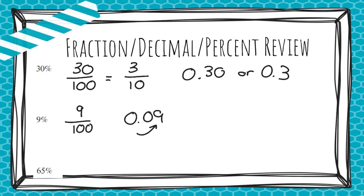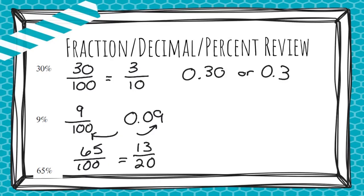The 9 has to be in the hundredths place because this is the hundredths. And then for 65%, you have 65 out of 100. If that wasn't an option, that means it can be simplified — I showed you how to do that in your decimal notes — but your decimal would still be 65 hundredths.